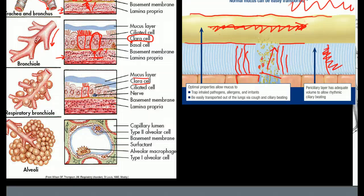You can see also the lamina propria, which is underneath the basement membrane, is also changing in character as we go. Here down in the bronchioles and the respiratory bronchioles, we start to see a fairly thick layer of smooth muscle.